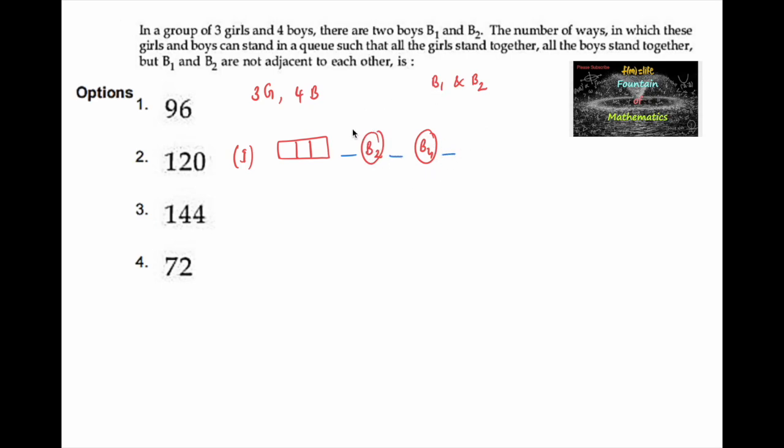So in these three gaps, these two boys can be placed in either 3C2 or 3C2 into 2 factorial. The number of ways these three girls can be arranged is 3 factorial. The boys B2 and B4 can be written in two ways, and B1 and B2 can be done in 3C2 into 2.